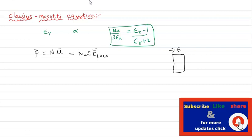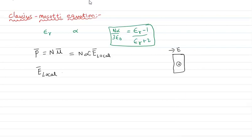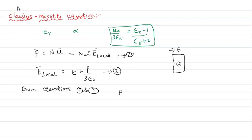Suppose we have a dielectric material in an electric field with a particular field intensity. We consider a local field intensity acting at a point inside the dielectric. From equations 1 and 2, we get: P-bar equals N alpha into E plus P by 3 epsilon-0, where the local field includes the contribution from the polarization.